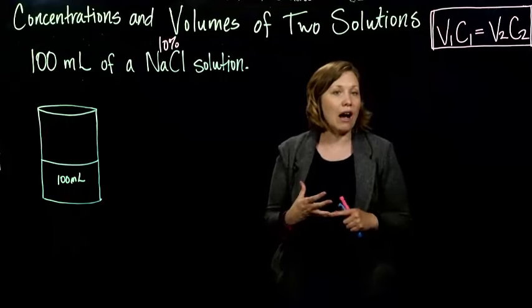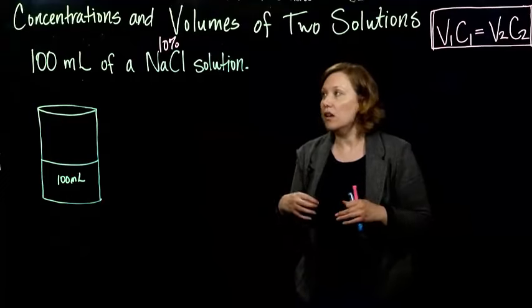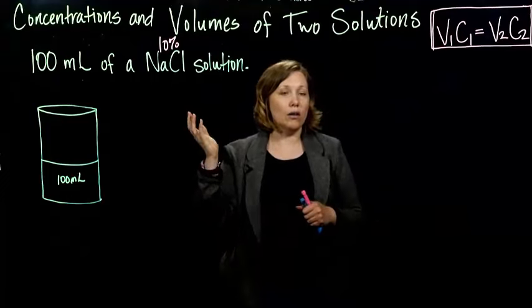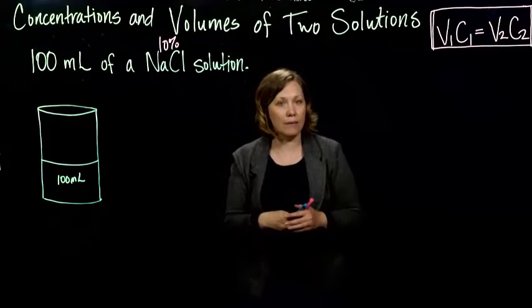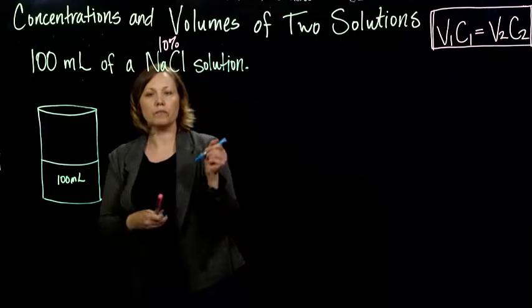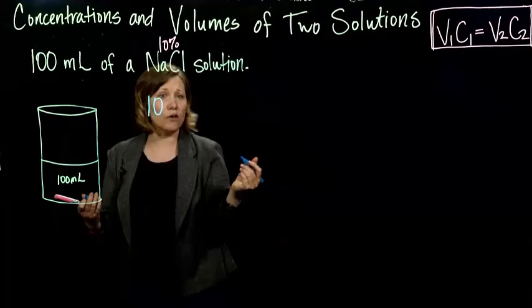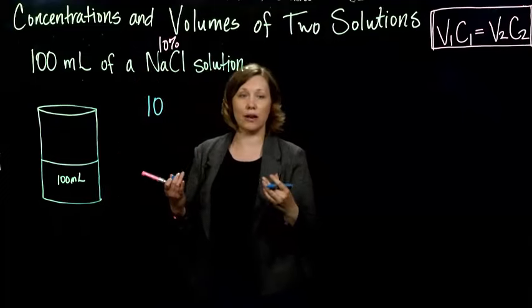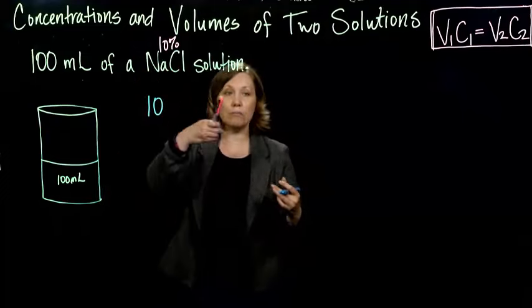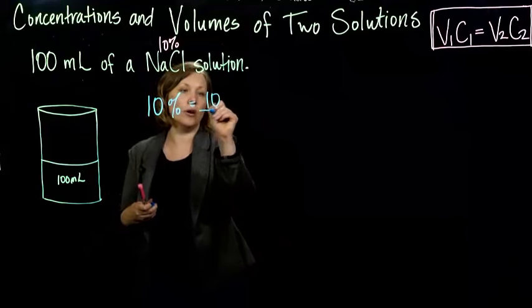Can I figure out how much of that 100 milliliters is sodium chloride? Well, 10%. How do we find 10% of 100? Well, there's a few ways that you can do it. You can just, if you know what percent is, you can just straight up use this idea of percent. 10% equals 10 per 100.